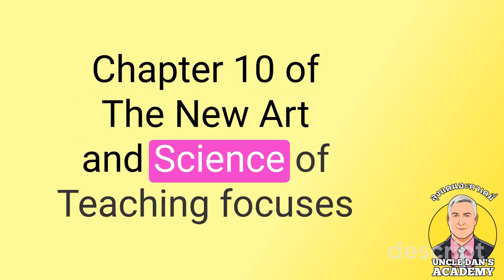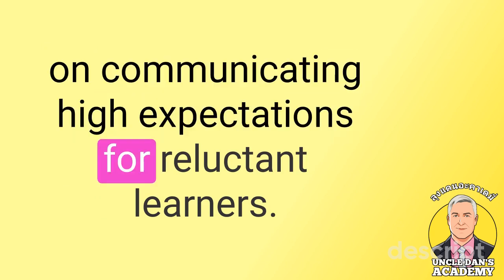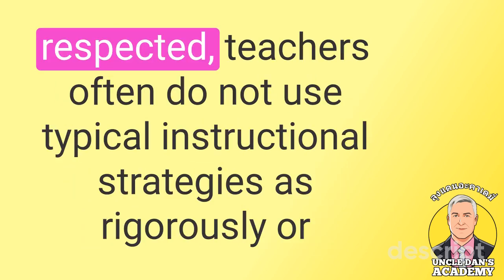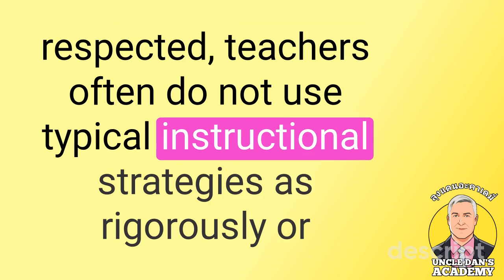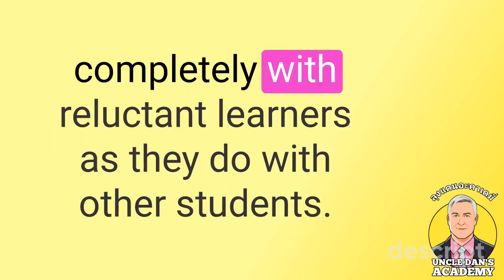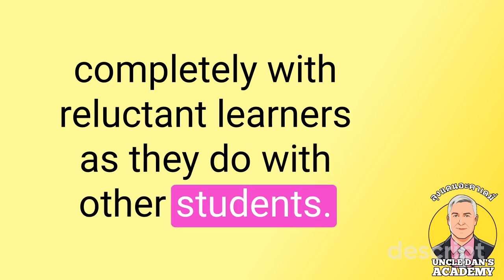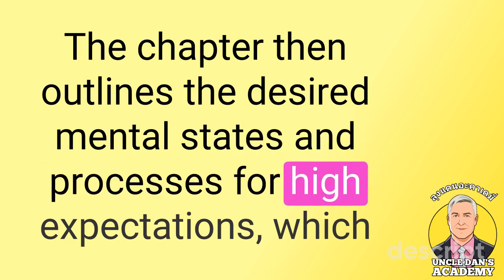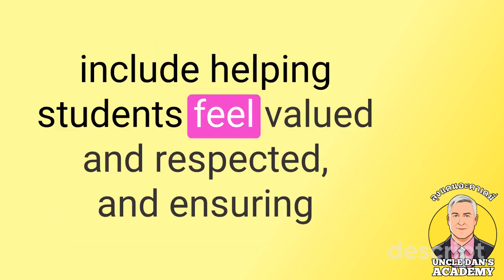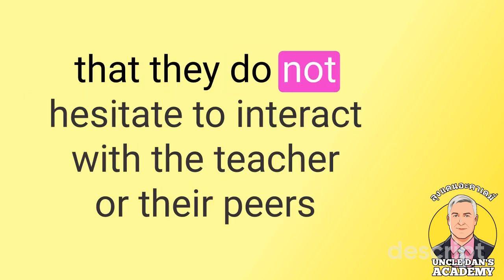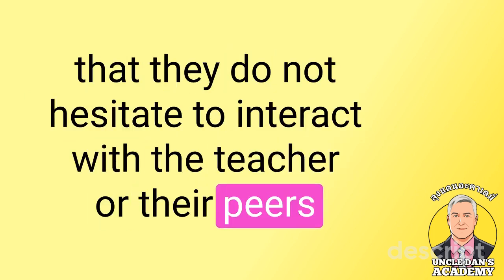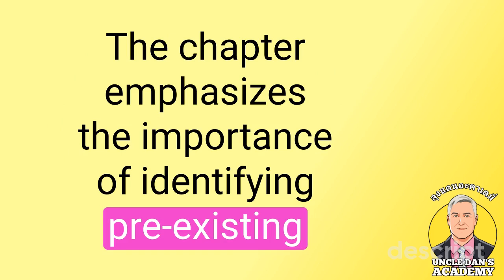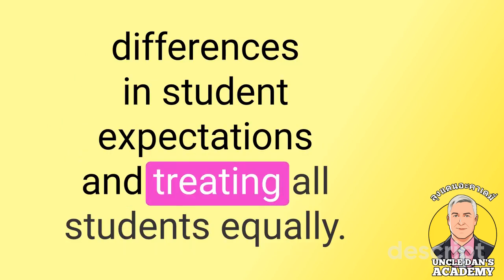Chapter 10 of The New Art and Science of Teaching focuses on communicating high expectations for reluctant learners. The chapter begins by acknowledging that while all students should be valued and respected, teachers often do not use typical instructional strategies as rigorously or completely with reluctant learners as they do with other students. The chapter then outlines the desired mental states and processes for high expectations, which include helping students feel valued and respected and ensuring that they do not hesitate to interact with the teacher or their peers.